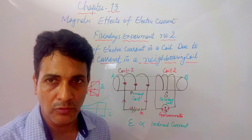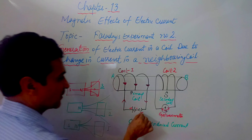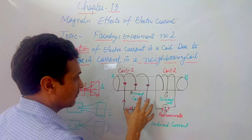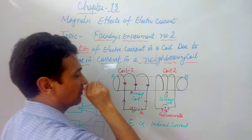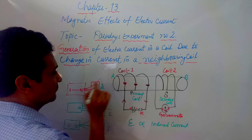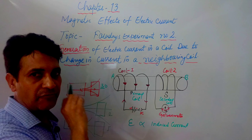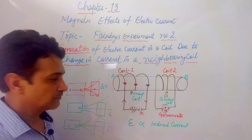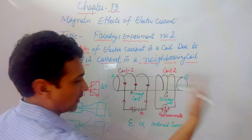The direction of induced current can be found by Fleming's right-hand rule. When this key is pressed, the current starts growing, it becomes a magnet, and magnetic field lines pass through. Suppose 30 magnetic field lines pass through this coil the first time — then the galvanometer gives a deflection to the right side.